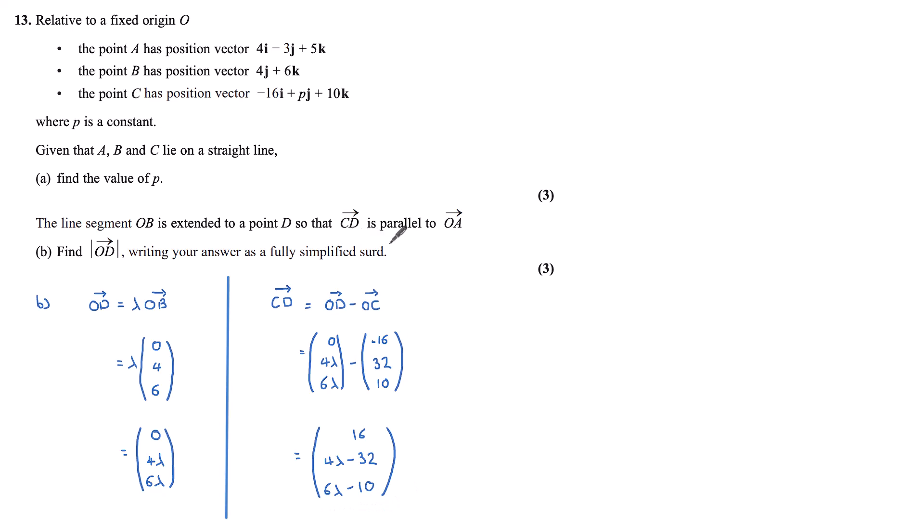Since we know CD is parallel to OA, then CD equals a multiple of OA. So we have our CD that we've just found, (16, 4λ-32, 6λ-10), is equal to our mu, I'm using this time, OA. OA, remember, is our position vector (4, -3, 5). If we set our i components equal here, then we get 16 equals 4 mu. Dividing both sides by 4 gives us mu equals 4.